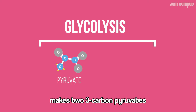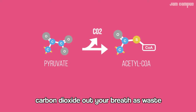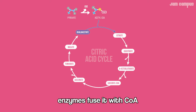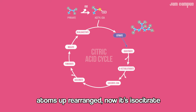But before the cycle starts, glycolysis makes 2 three-carbon pyruvate. There's a carbon mix — acetyl-CoA. Carbon dioxide is what you breathe out. Cycle regenerates oxaloacetate. Enzyme fusion with CoA to form citric acid — citrate, a 6-carbon molecule with 3 carboxyl groups. Atoms rearranged.